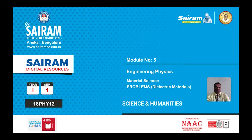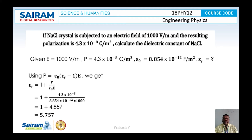The first problem is: if a NaCl crystal is subjected to an electric field of 1000 V per meter, and the resulting polarization is 4.3×10⁻⁸ coulomb per meter square, calculate the dielectric constant of NaCl. The given data is: E = 1000 V/m, P = 4.3×10⁻⁸ C/m², and ε₀ = 8.854×10⁻¹² farad per meter square.